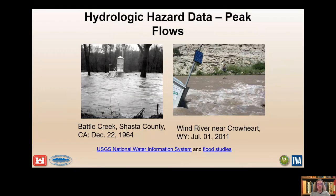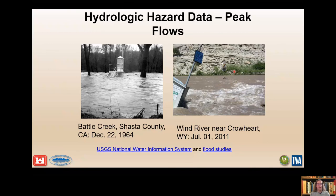Stream flow data from the USGS is critical for flood hazards. They do a fantastic job at stream flow measurements, rating curves, and archiving data. Both pictures illustrate floods above the rating curve for the gauge. It's critically important to understand data collection methods, limitations, and quantify uncertainty in discharge estimates. Here on the right on the Wind River, we see a USGS hydrographer in a cable car making a current meter measurement. USGS flood reports are also an invaluable resource, with links provided for handy reference.